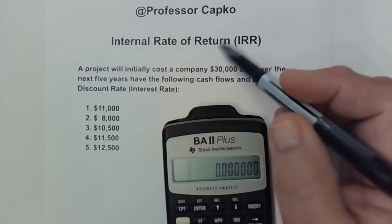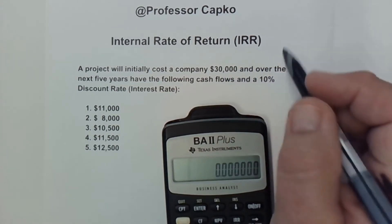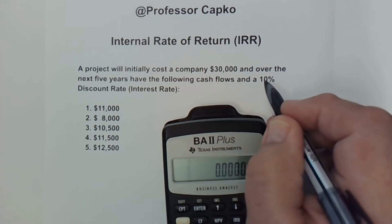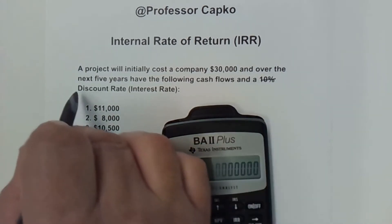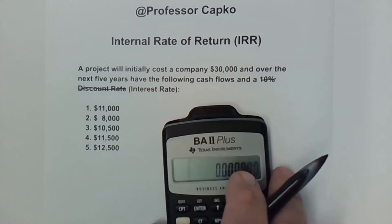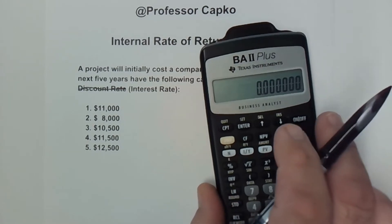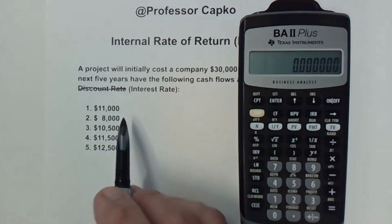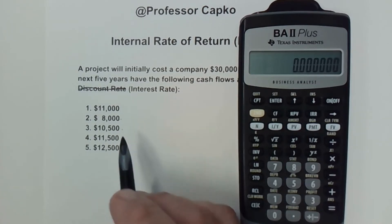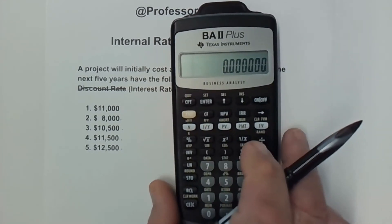In this project, the company is going to invest thirty thousand dollars — thirty thousand dollars is going to leave the company's bank account and go into this investment. Then over the next five years the following cash flows are projected. We have eleven thousand dollars coming back from the investment in year one, eight thousand in year two, ten thousand five hundred in year three, eleven thousand five hundred in year four, and twelve thousand five hundred in year five.